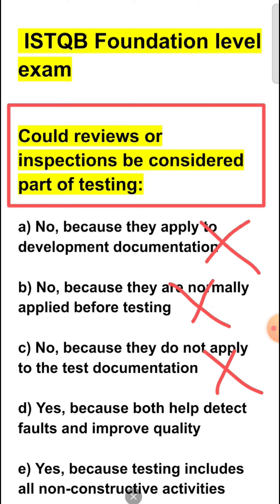Option D is correct because review and inspection will be performed to detect the fault or defect in the document and to improve the quality. So option D is the correct answer. Option E is also incorrect. The answer to this question is D — both review and inspection help detect faults and improve quality.